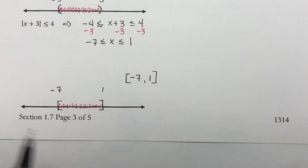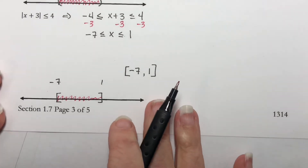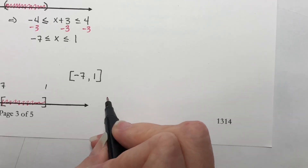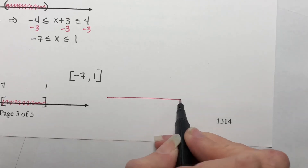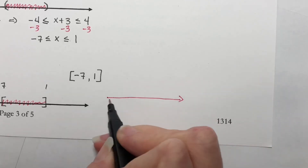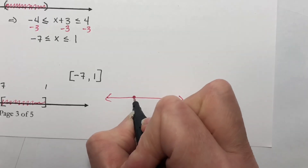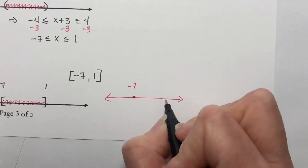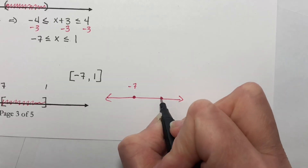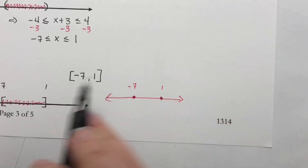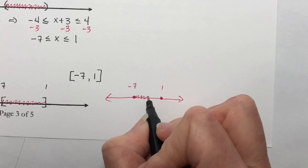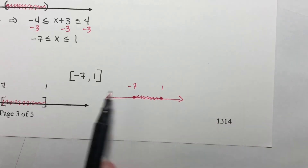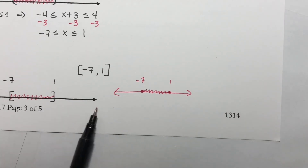Just as a reminder, in the old notation, what this graph would look like is a closed-in circle at negative 7 and a closed-in circle at 1 because these had brackets, with shading between them. Old notation versus the better interval notation.